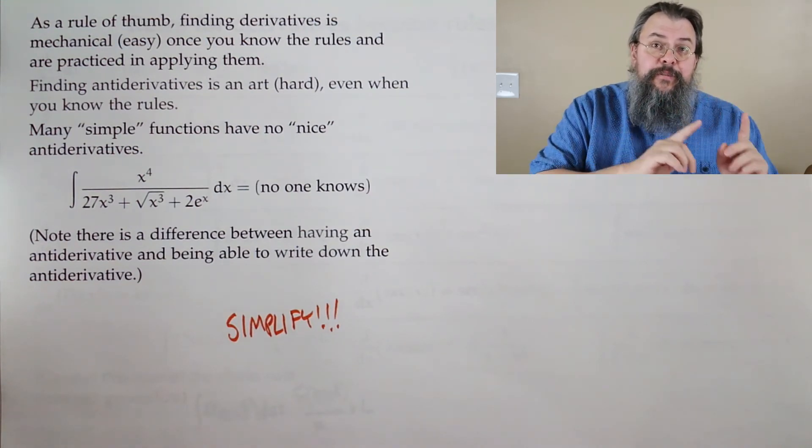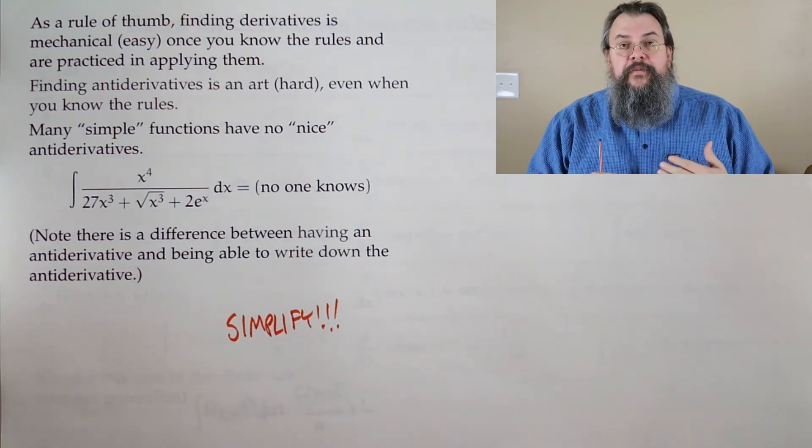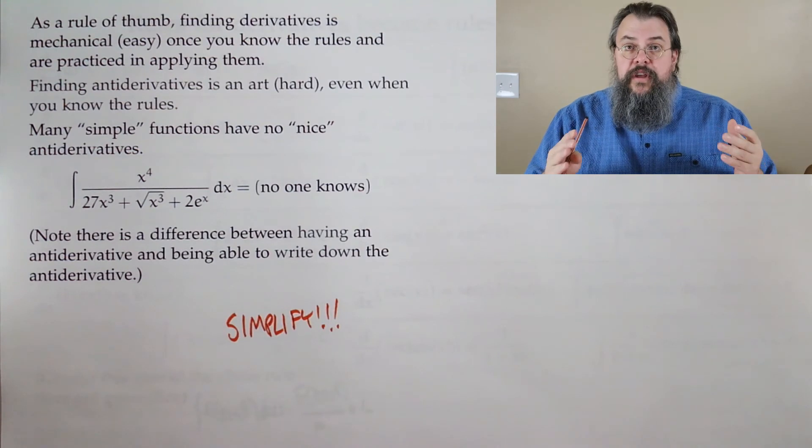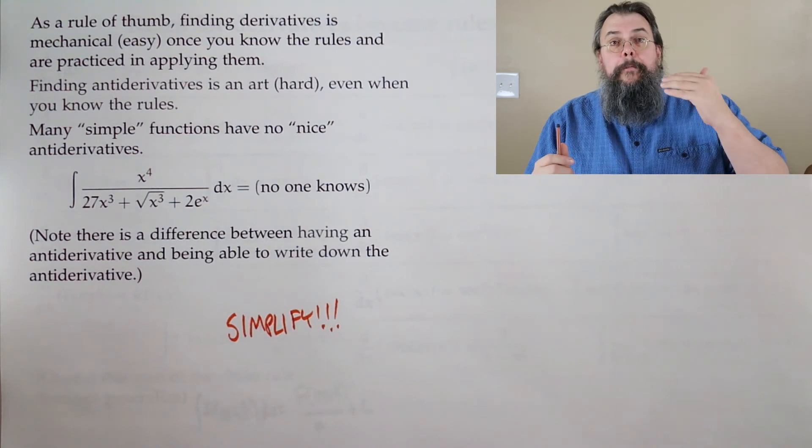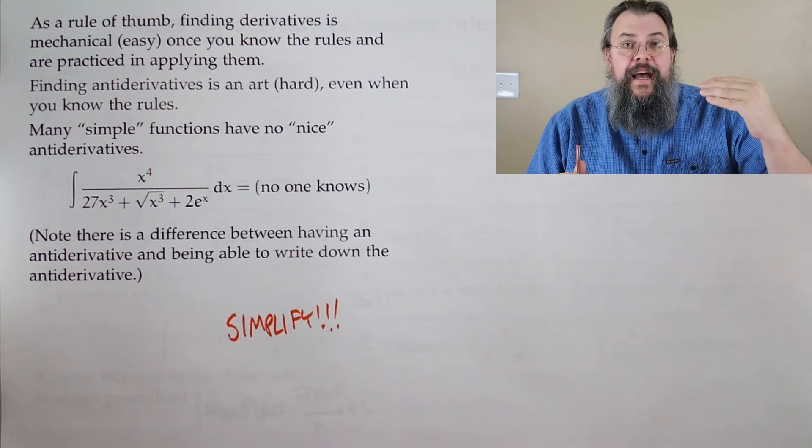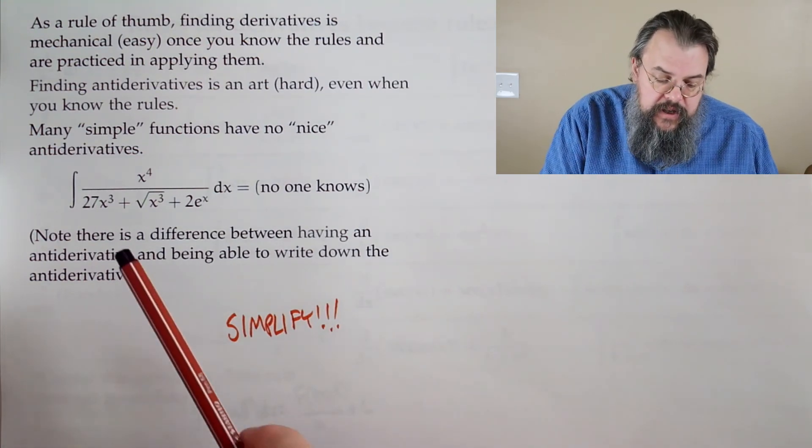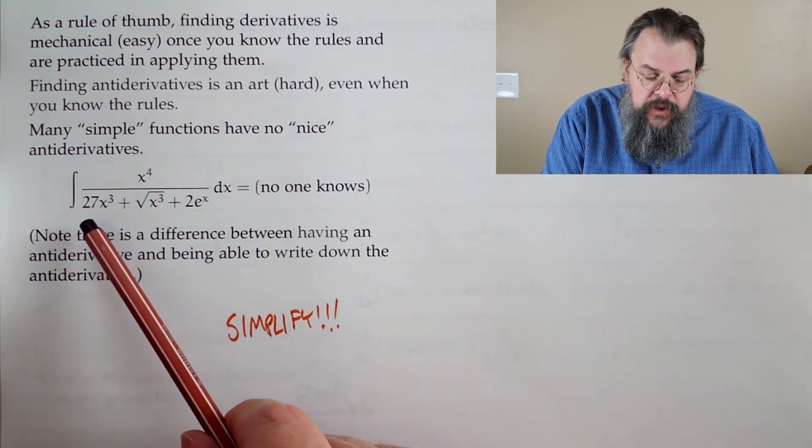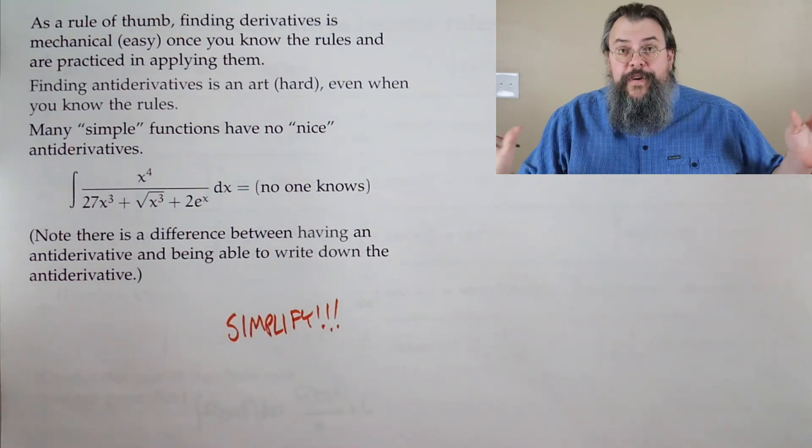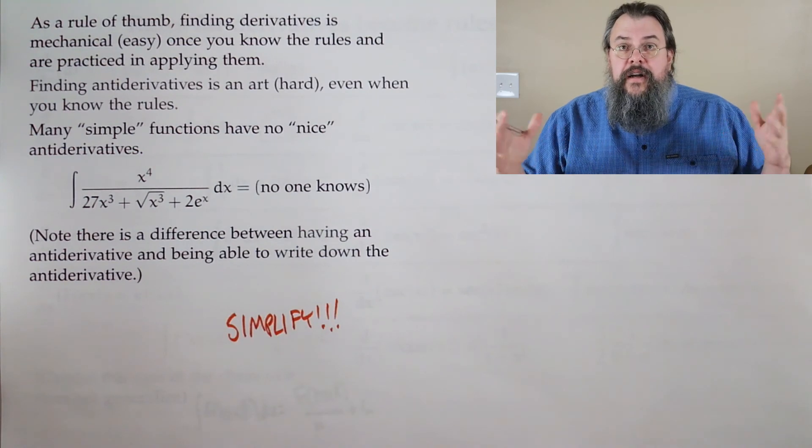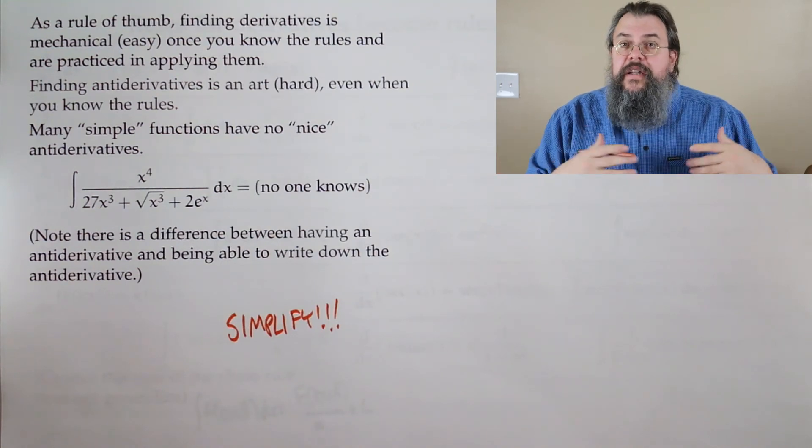And of course, the thing is, sometimes you can't. There's just no way to do it. And so there are functions where we cannot explicitly find a nice formulation of the antiderivative. Now, it's slightly different from saying there is no antiderivative. We'll actually be able to say from a purely theoretical perspective, if you have a reasonable function, and here we'll say continuous, it must have an antiderivative. It must. But having an antiderivative and having a nice formula for it are two different things. And so if you take a function like here, x to the fourth over 27x cubed plus the square root of x cubed plus 2e to the x, it's a function. And it's a perfectly fine, valid function.